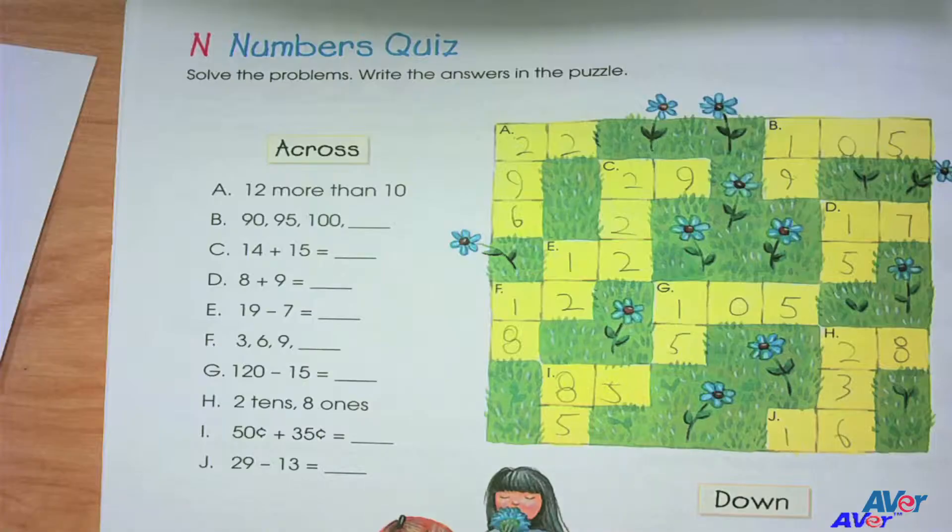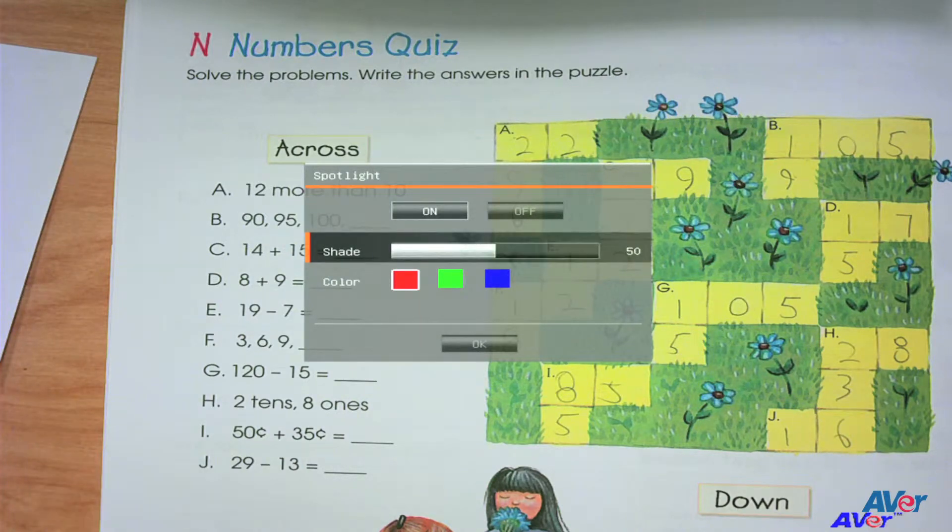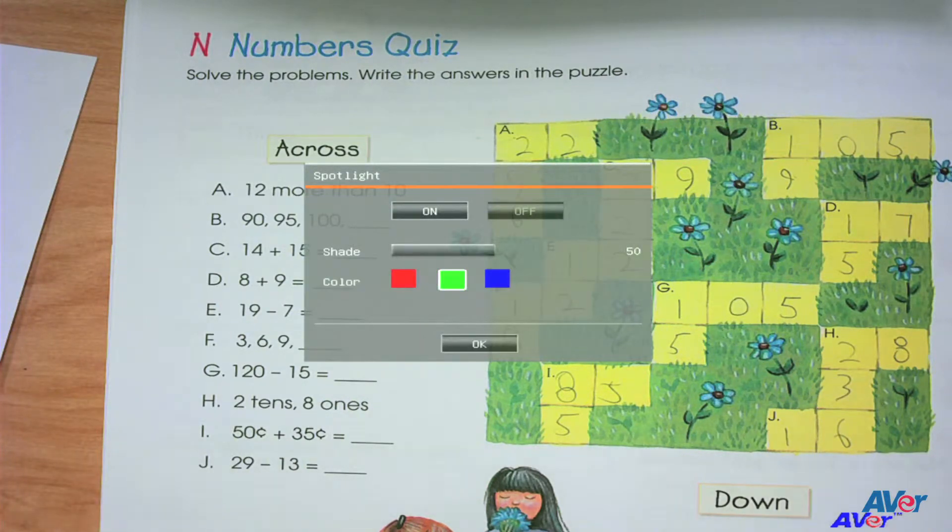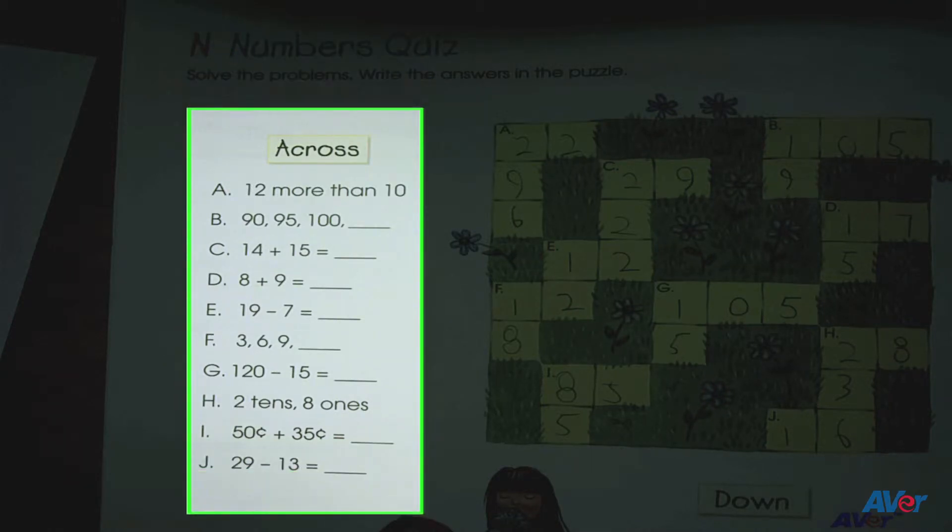Avivision also offers exclusive presentation features called Spotlight and Wiser. The Spotlight feature allows you to isolate a part of your live image. Adjust the transparency level and color, and use the arrows to adjust the size. When you're ready, click enter and you can now move your spotlight around to show selected parts of your image.